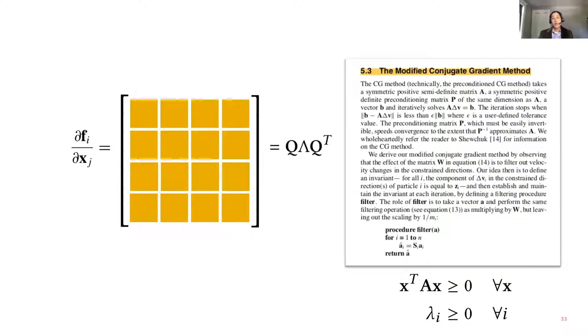That is why we need the eigen decomposition of each tetrahedron. Once you have the eigenvalues in hand, you have to filter them — if any are negative, you need to snap those to zero instead.